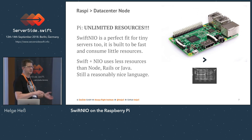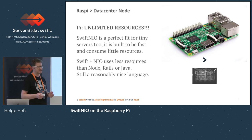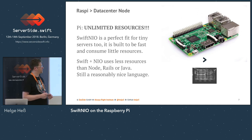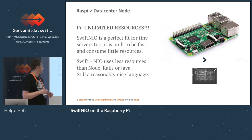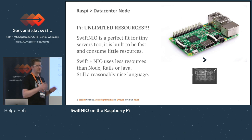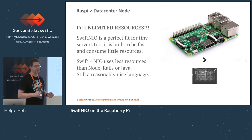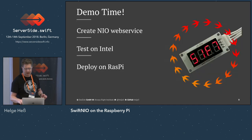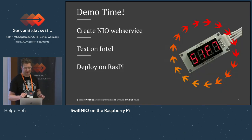I don't want to get into why Swift is better than other languages on the server — you've probably heard enough about that at the conference already. The only thing I want to say is it produces fast binaries, it uses little memory, and it's still a reasonable language — not C++ or something like that.